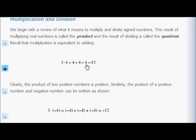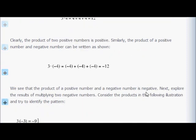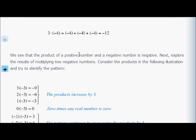The product of two positive numbers is positive. Similarly, the product of a positive number and a negative number: here you have 3 times negative 4, and you're just adding negative 4, and negative 4, and negative 4, and you get negative 12. So the product of a positive number and a negative number is negative.